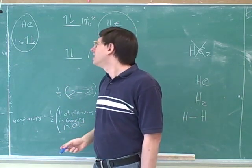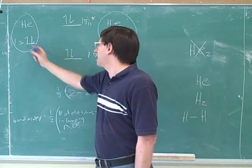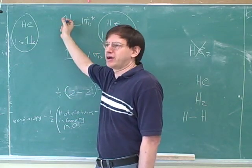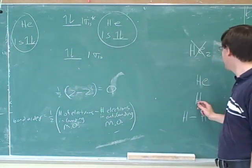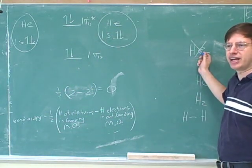So there's no advantage for these two heliums coming together and forming a molecule. There's no advantage because the energy from these two electrons is canceled by the energy disadvantage from these two electrons. All right, so now we can explain why hydrogen is diatomic and helium is not diatomic.